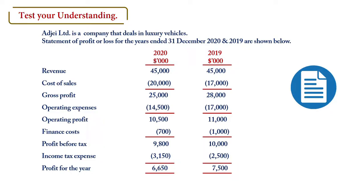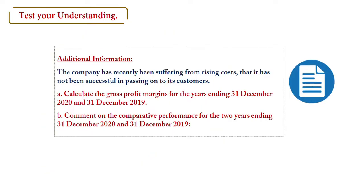Let's test our understanding. AJ Limited is a company that deals in luxury vehicles. The statement of profit or loss for the years ended 31 December 2020 and 2019 shows revenue, cost of sales, and gross profit of 25,000 and 28,000 respectively, along with operating expenses, operating profit, finance cost, profit before tax, income tax, and profit for the year. Additional information: the company has recently been suffering from rising costs that it has not been successful in passing on to its customers. We are to calculate the gross profit margins for both years and comment on comparative performance.